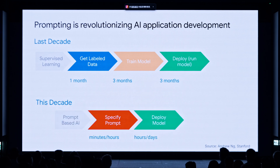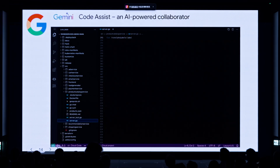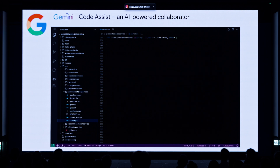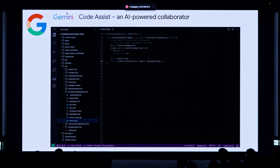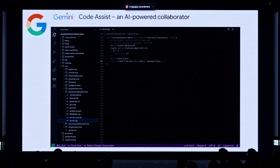Now prompting is revolutionizing AI application development in this decade. What used to take months is now taking minutes, hours, and days to build — and that's where a fantastic opportunity exists for developers across the world. Here's an example of a generative AI application I'm working on today: Gemini CodeSys, an AI-powered collaborator where developers can generate code, write tests, and transform their code repositories using generative AI. AI is almost a coding assistant for developers across Google as well as many companies we're selling this product into.